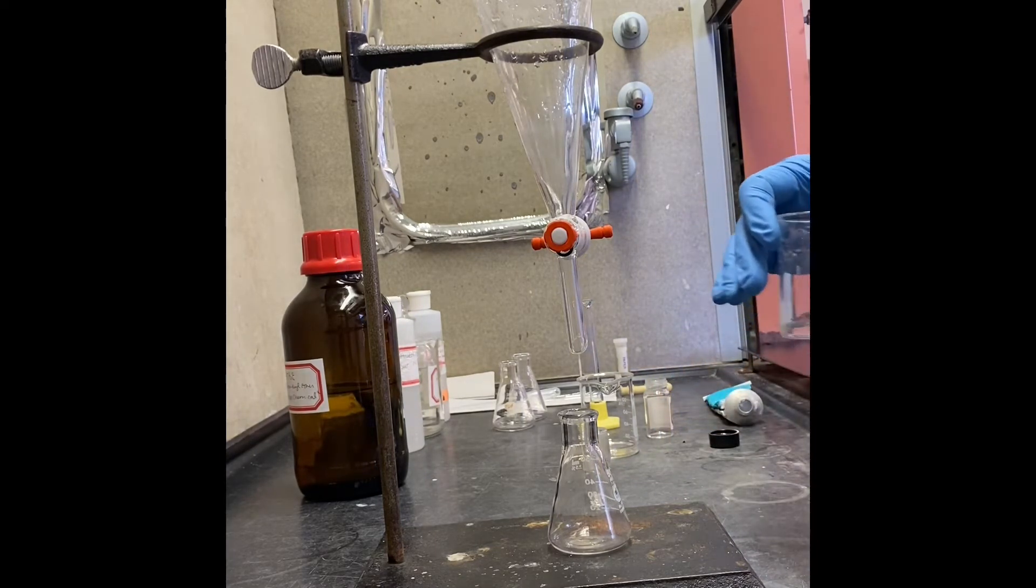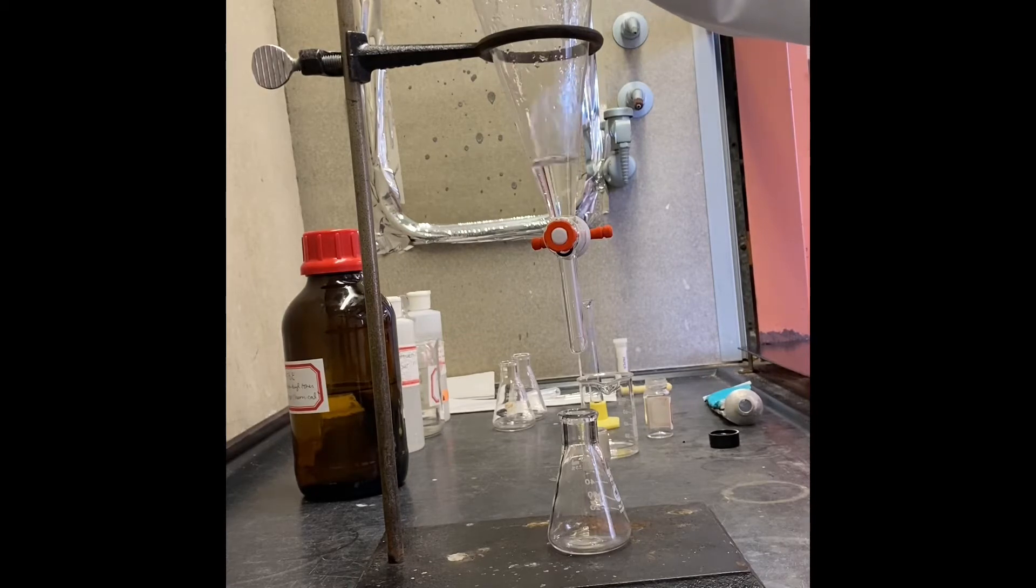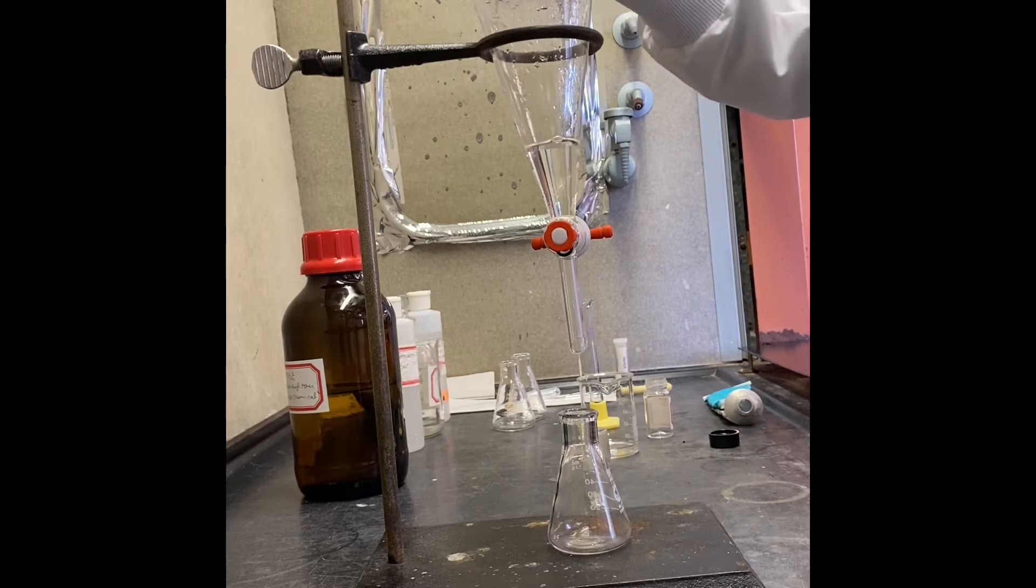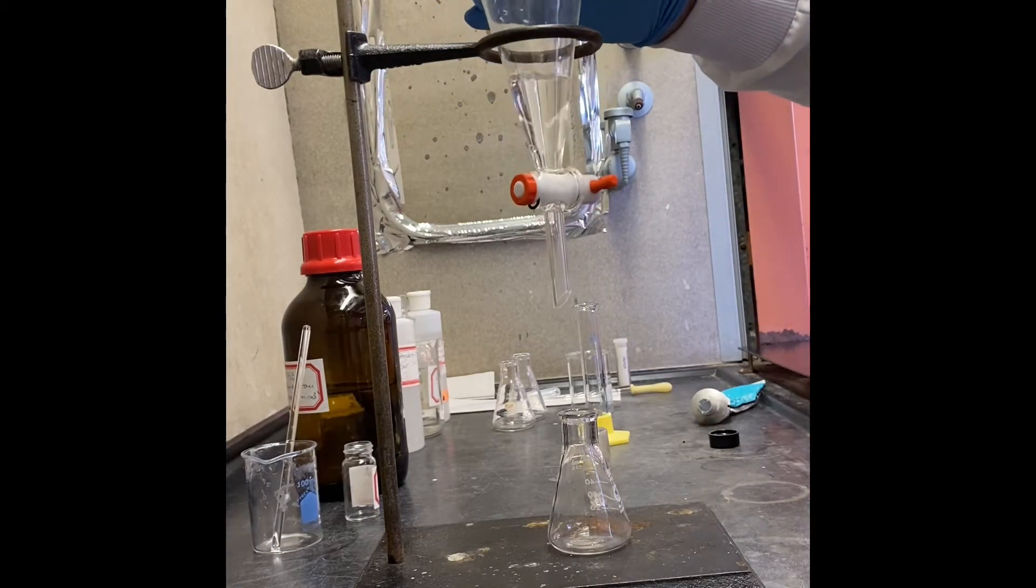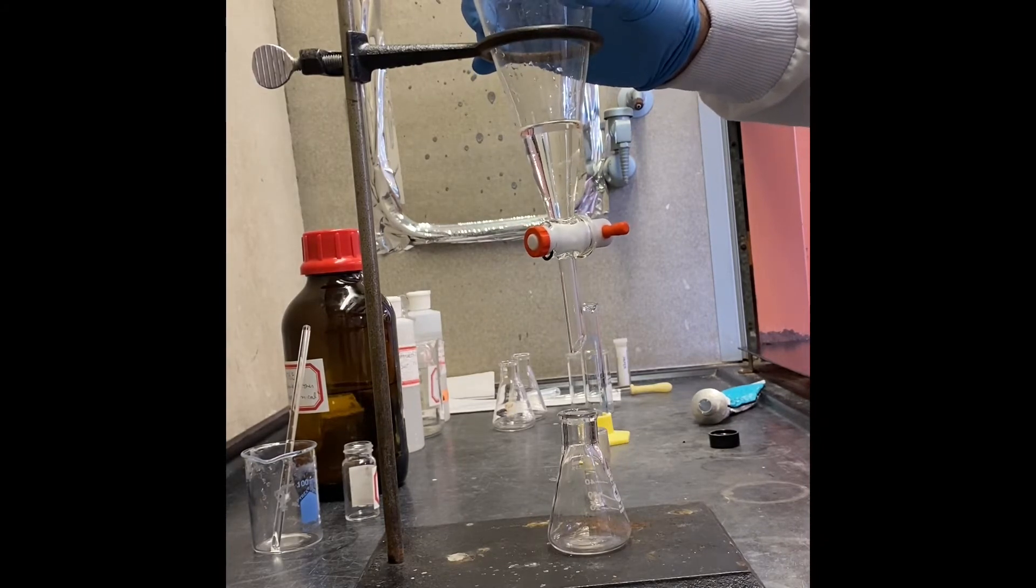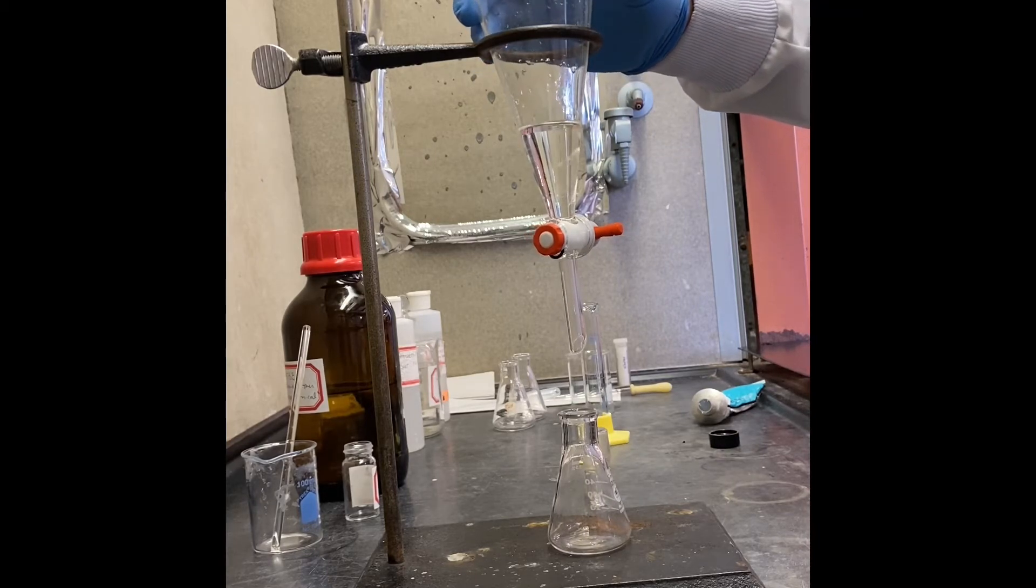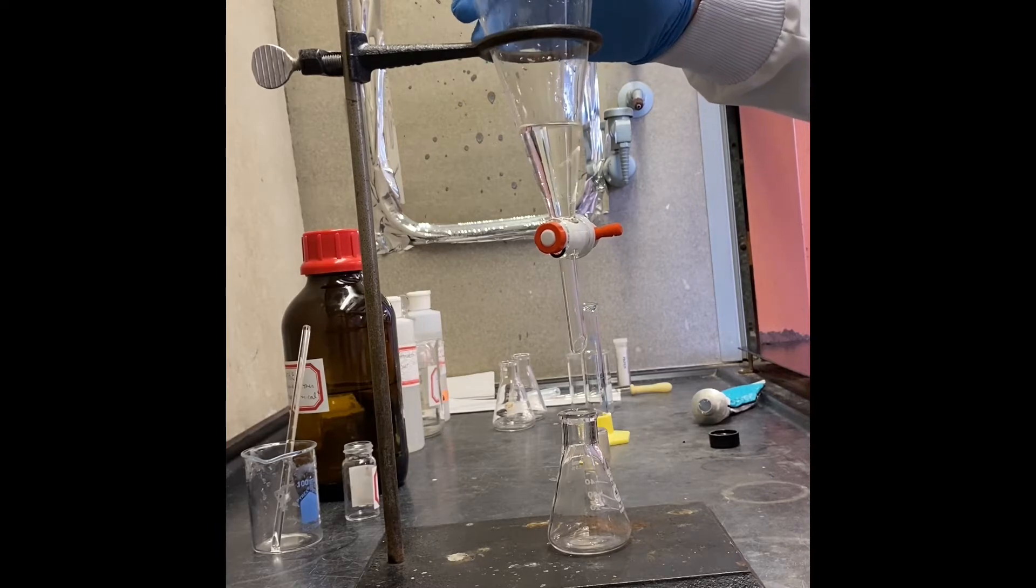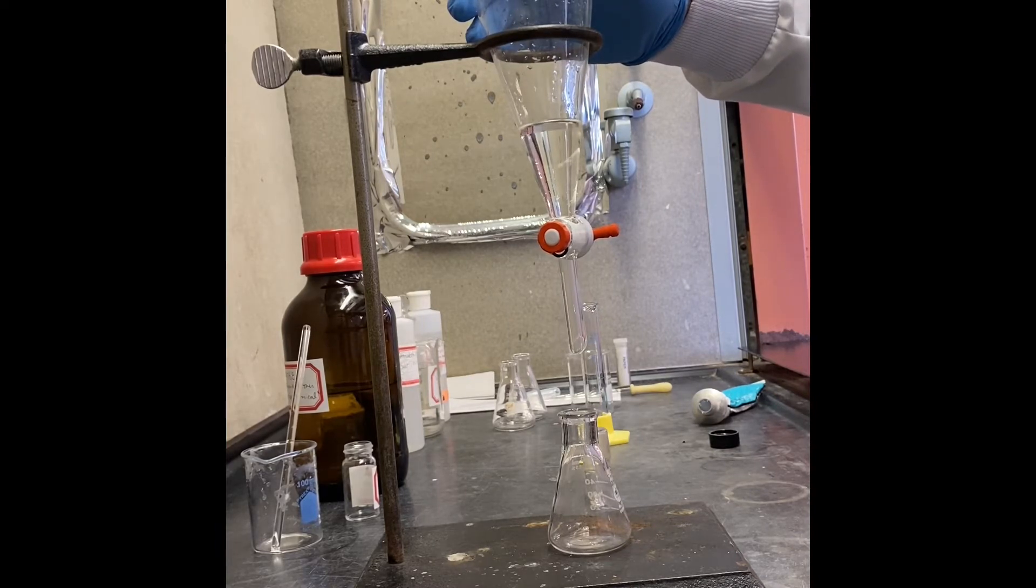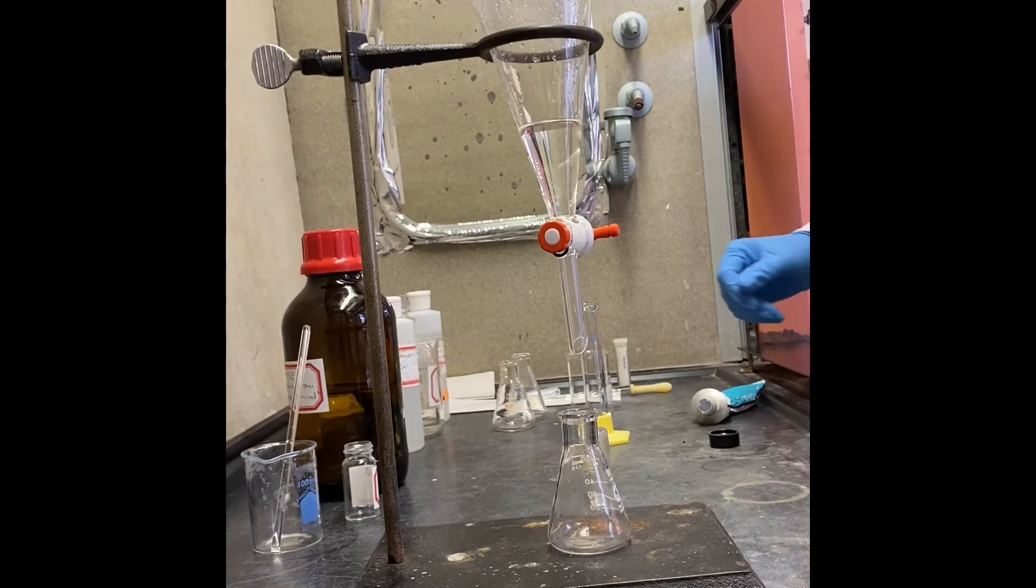Once dissolved, I'm going to transfer that to our glass separatory funnel. Our mixture here, one and a half grams for extraction, includes a carboxylic acid which is benzoic acid, the phenol derivative 4-tert-butyl phenol, and 1,4-dimethoxybenzene. Now we're going to start the extraction.